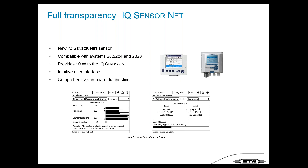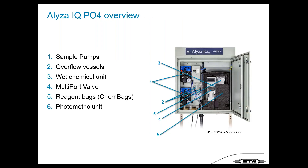We have extensive onboard diagnostics — the complete measurement unit controls every step it performs and you don't need to know much detail inside. Inside ELISA we have integrated sample pumps, overflow vessels, a wet chemical unit, the multiport valve, space for the reagent cam bags, and a photometer unit.